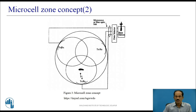This approach is superior to sectoring since antennas are placed at the outer edge of the cell and any base station channel may be assigned. As a mobile travels from one zone to another within the cell, it retains the same channel. Unlike in sectoring, a handoff is not required at the MSC when the mobile travels between zones within the cell. The base station simply switches the channel to a different zone site, so interference is reduced. This technique is particularly useful along highways or urban traffic corridors.